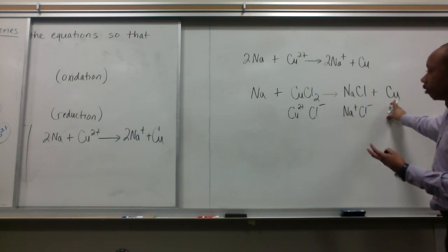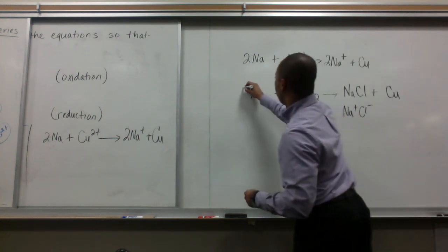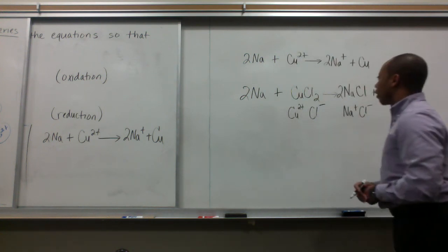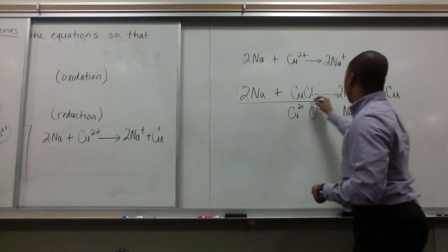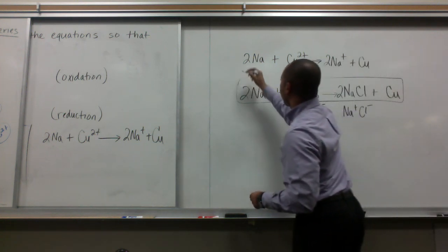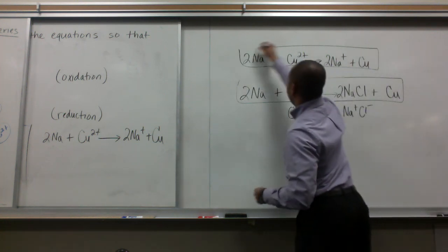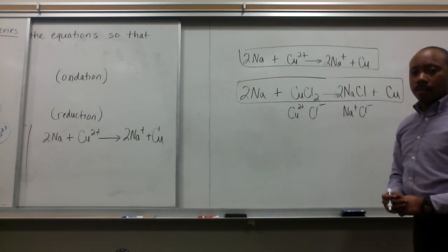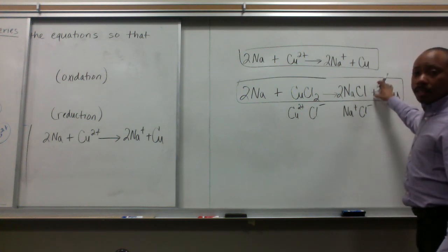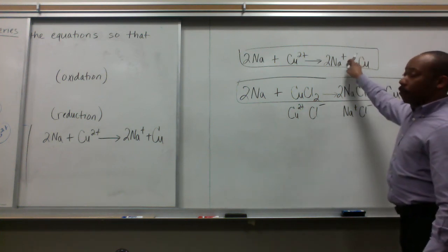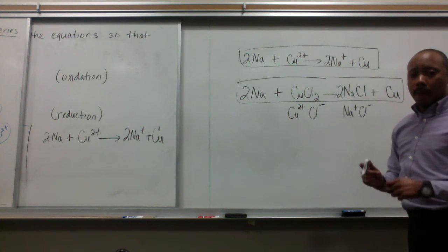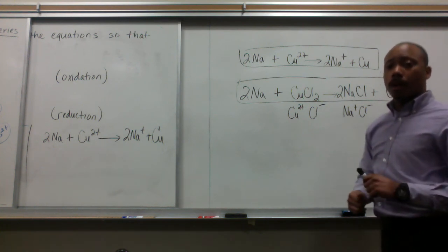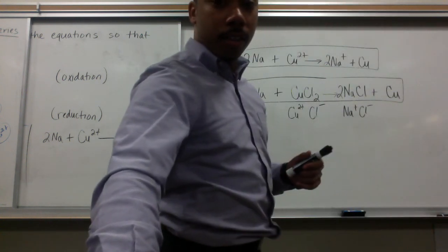If we balance this equation, 2 here and a 2 here. This looks very much like this. The only difference is, here I'm adding in my chloride ions. This is what actually happens in that beaker. Everything before it is why it happens in that beaker. Hope this helps, guys. If you have any questions, email me and take notes on this stuff.